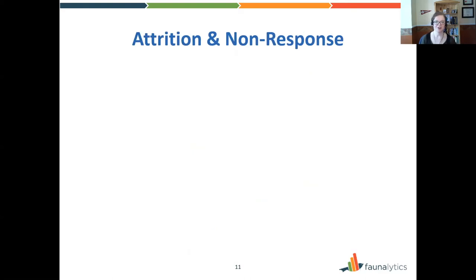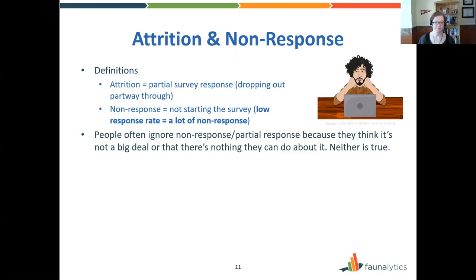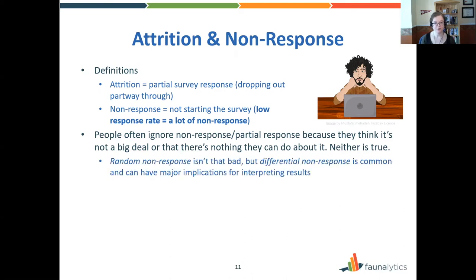Let's turn next to attrition and non-response. Attrition refers to a partial survey response — someone who completes some questions but drops out partway through. Non-response means not starting the survey at all. A low response rate means there was a lot of non-response. Oftentimes people ignore non-response, thinking either it's not a big deal or there's nothing they can do about it — neither of which is true.